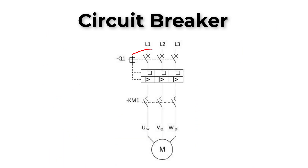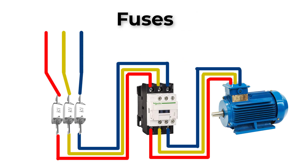This is the circuit breaker symbol in electrical diagrams. Fuses are a little bit different because we can't turn them on and off. Once connected to the circuit, we can't use a fuse as isolation. It will protect the circuit by blowing off, and at that point we have to replace it with new fuses.